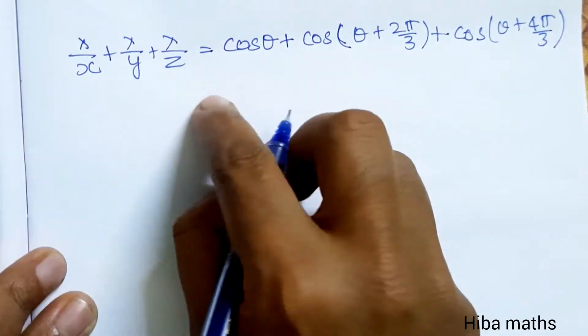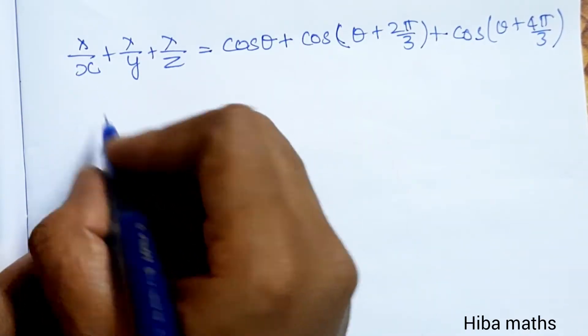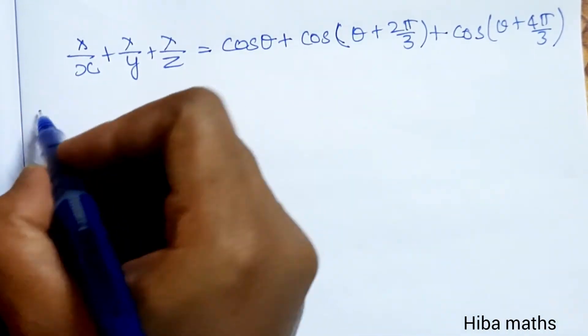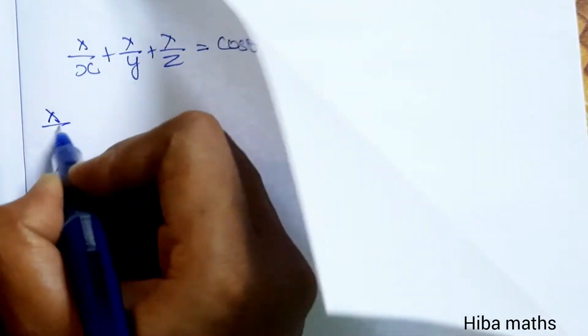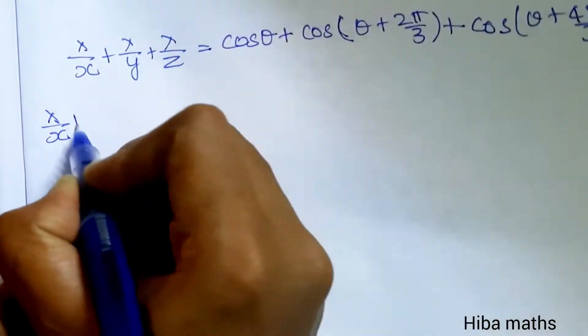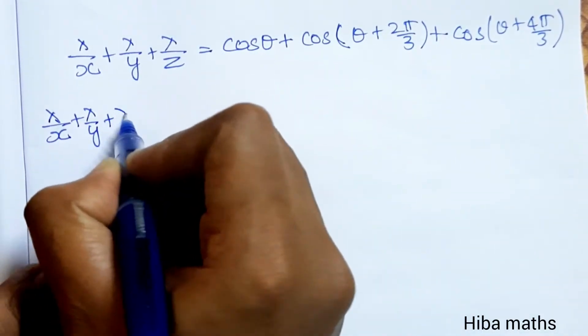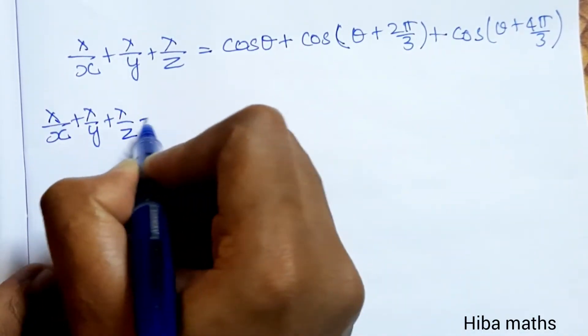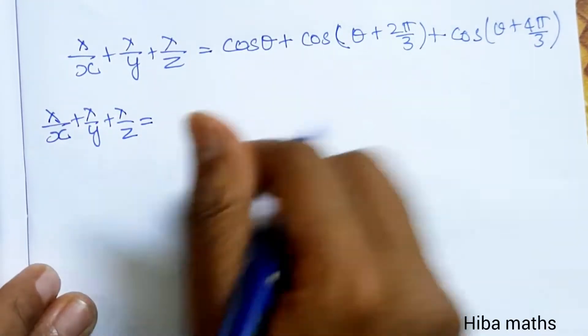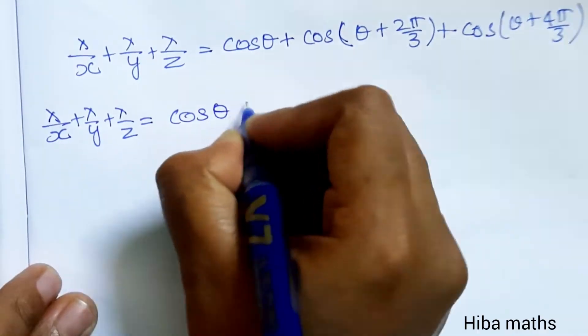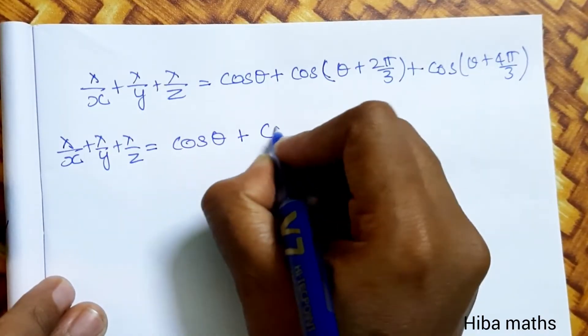Adding the left-hand side terms together and putting them all on one line: the right-hand side becomes λ/x + λ/y + λ/z. We will now expand the left-hand side using the compound angle formula.